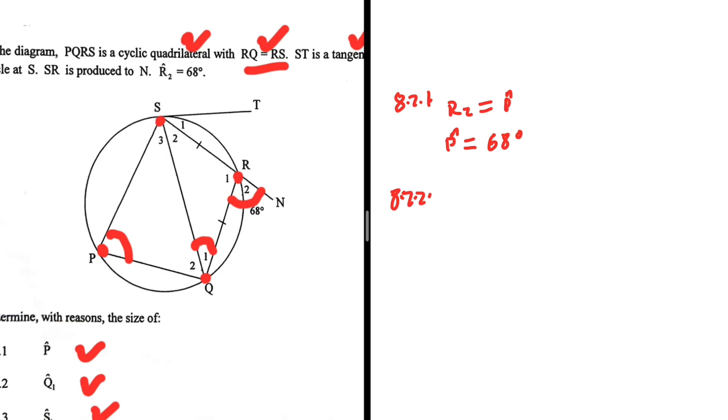If RQ equals RS, then SQ must equal Q1 because they are subtended by equal chords. And then R1 plus R2 will equal 180 degrees. Sum of angles on a straight line. R1 will equal 112 degrees.